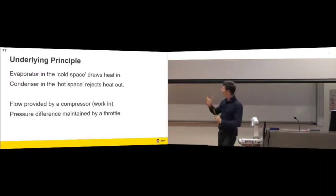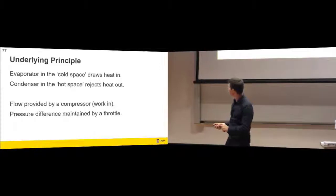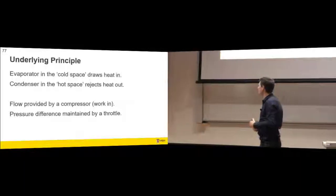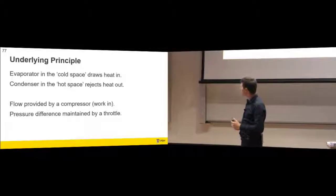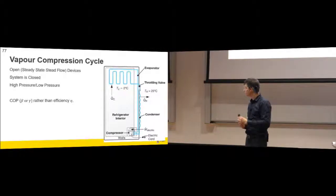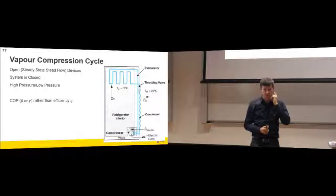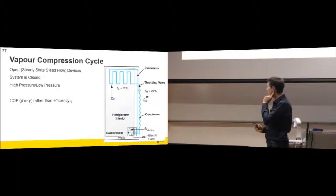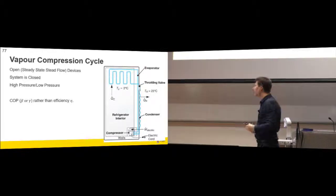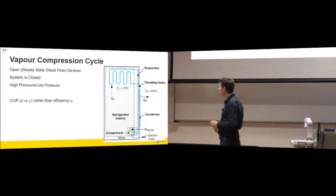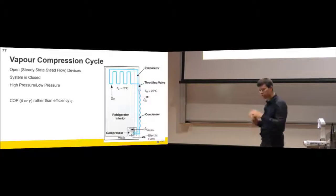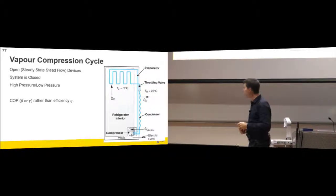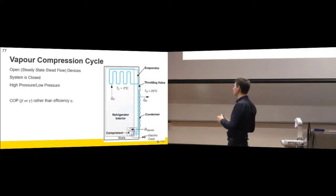The evaporator in the cold space draws heat in, condensation in the hot space rejects heat out. The flow in this case is provided by the compressor, not a pump. The pressure difference is maintained by the throttle. So it's an open steady-state steady-flow system, same as the Rankine and the Brayton. In this case the actual system is closed - like the Rankine rather than the Otto or Diesel. You've got a refrigerant that must remain encapsulated; it will evaporate if you let it go.